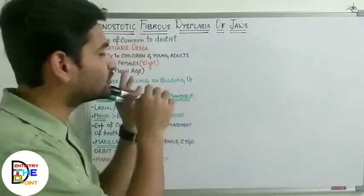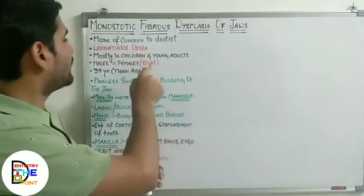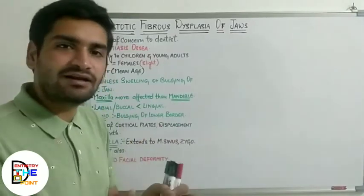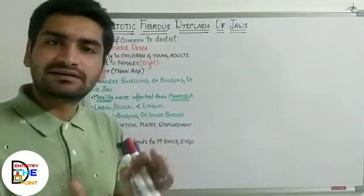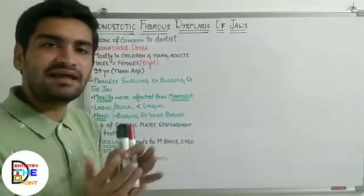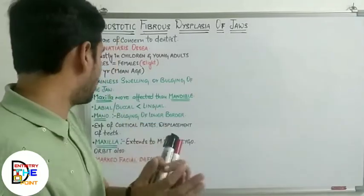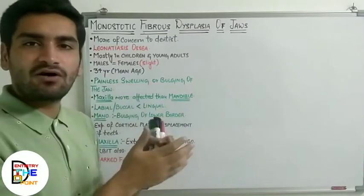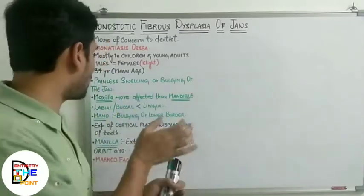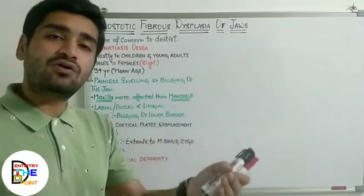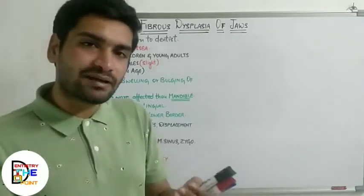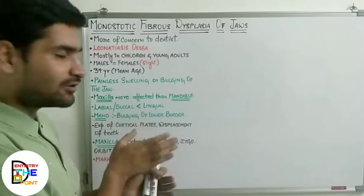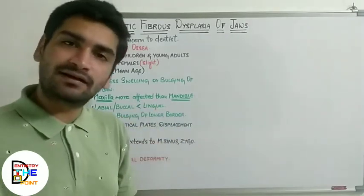It mainly affects children and young adults; males and females are equally affected, though some cases have shown a slight predilection towards females. The mean age of occurrence is considered 34 years. The main clinical features include painless swelling or bulging of the jaw — either maxilla or mandible. Maxilla is more commonly affected than mandible, as the cases of maxilla reported to date are greater in number.